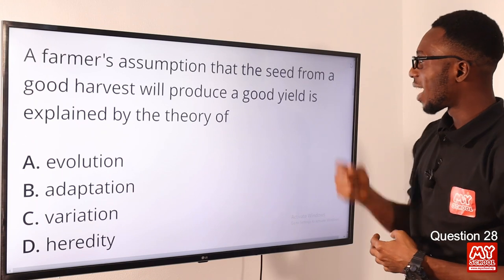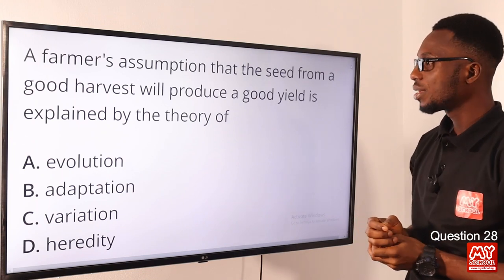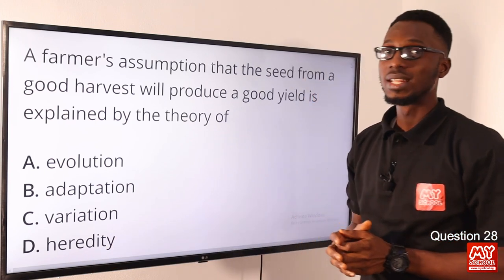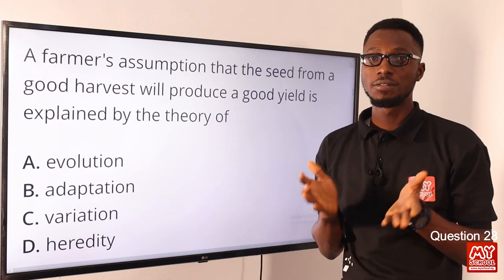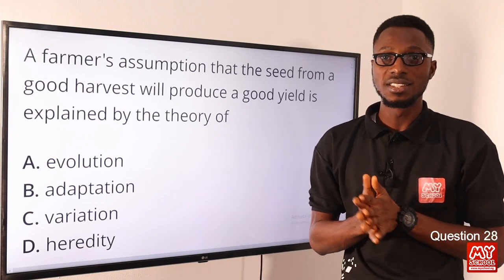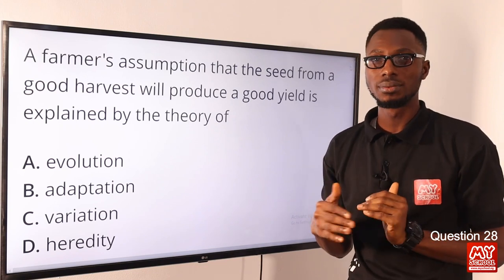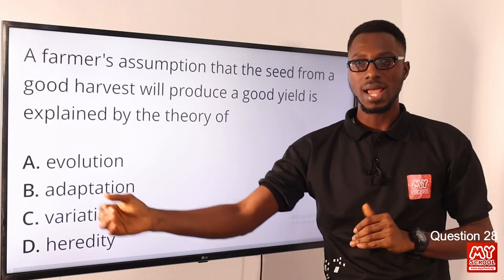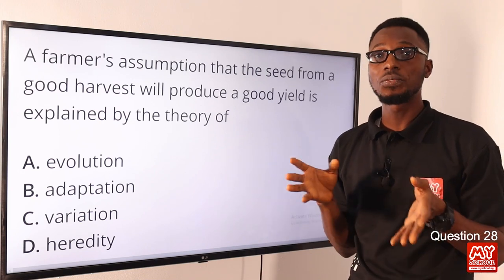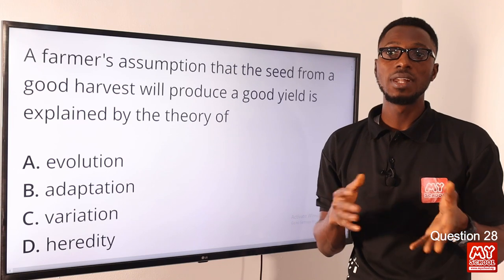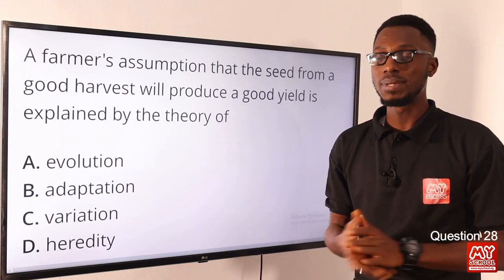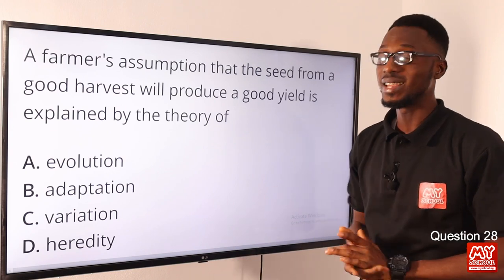Question 28: A farmer's assumption that the seed from a good harvest will produce a very good yield is explained by the theory of heredity. Heredity is about the transmission of inherited traits or characters from parents to offspring via the genes. Evolution is the sum total of the adaptive changes that organisms have undergone over a long period of time. Adaptation refers to the changes an organism undergoes to become fitted to its environment for successful living and reproduction. Heredity best explains this, so option D is the correct option.